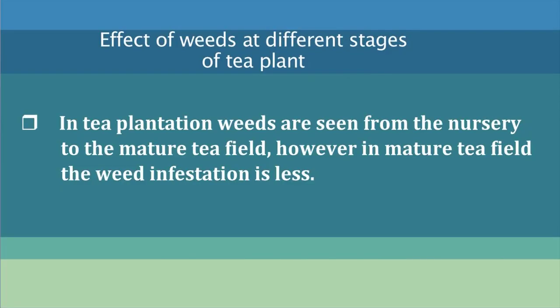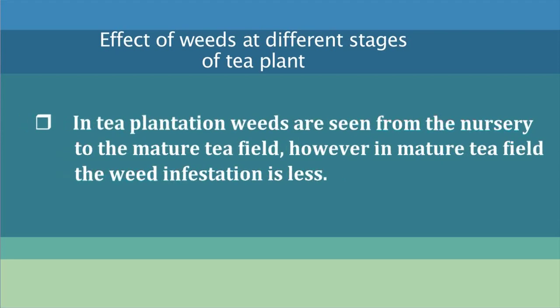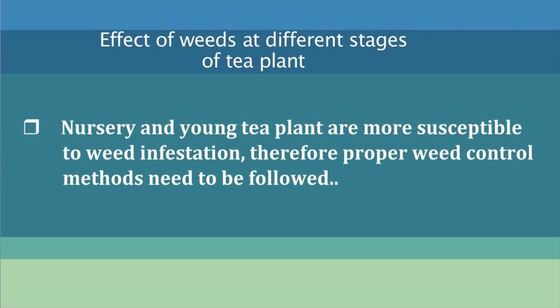Now, let's see the effect of weeds at different stages of the tea plant. In tea plantations, weeds are seen from the nursery to the mature tea fields. However, in mature tea fields, weed infestation is less as mentioned earlier. Nursery and young tea plants are more susceptible to weed infestation; therefore, proper weed control methods need to be followed.